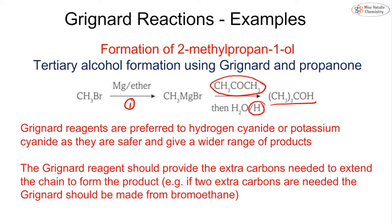Grignard reagents are actually preferred to hydrogen cyanide or potassium cyanide purely because they are safer — we already know the risks of HCN and KCN being particularly toxic. They also give a wider range of products because we can have any R group on the Grignard reagent, extending the carbon chain by any number of carbons, as opposed to just one that we'd get with the cyanide group.